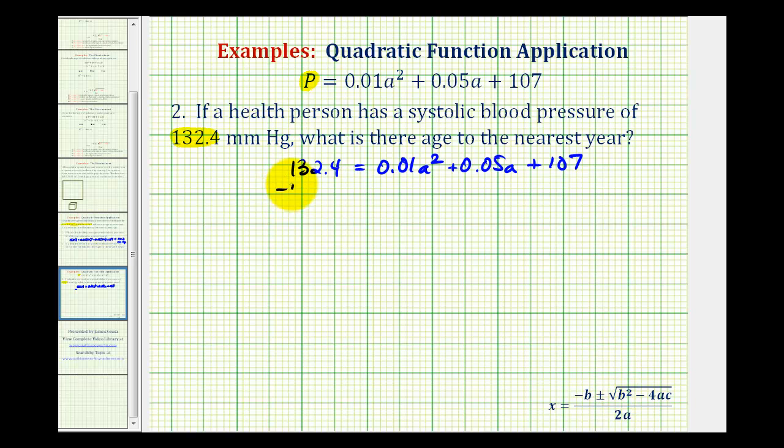So we'll start by subtracting 132.4 on both sides of the equation. So we'll have zero equals 0.01A squared plus 0.05A. 107 minus 132.4 is going to be negative or minus 25.4. And now to apply the quadratic formula, A is the coefficient of the degree two term. So we'll have A equals 0.01. B is the coefficient of the degree one term, 0.05.